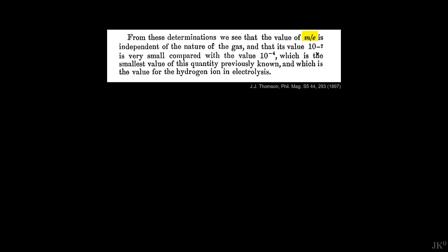Thomson found the electron's mass-to-charge ratio to be over a thousand times smaller than the smallest known mass ratio corresponding to hydrogen ions. Side note here: if you read old papers, you will find the bad habit back then of reporting quantities without units. In SI units, the value 10 to the minus 7 found by Thomson is close to 6 times 10 to the minus 12 kilograms per coulomb.